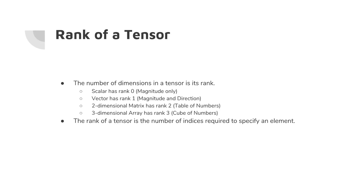The rank of a tensor is the number of indices required to specify an element. Suppose you have a one-dimensional vector — you can identify an element by just one index, like the zeroth, first, or fifth element. For a table of numbers you require two indices, i and j, to identify a number in the matrix — for example, the element at position one comma three in a two-dimensional matrix.